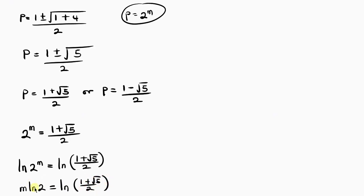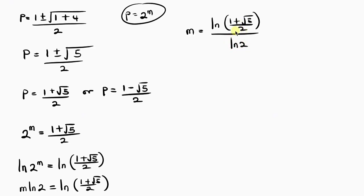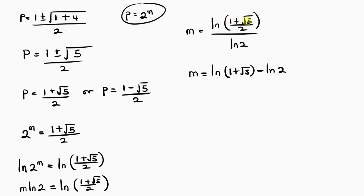Making m the subject: m equals ln of 1 plus the square root of 5 over 2, divided by ln 2. We can also separate the logarithm of the numerator and denominator, writing it as ln of 1 plus the square root of 5, minus ln 2, all divided by ln 2.